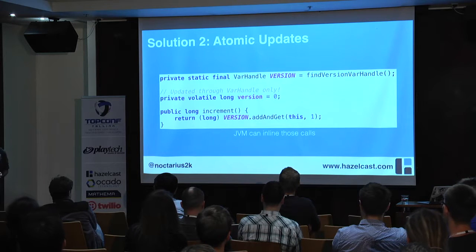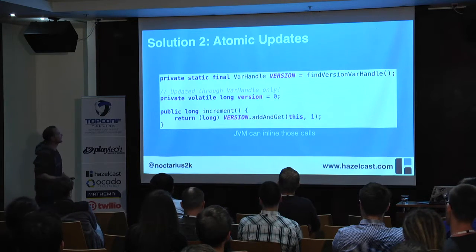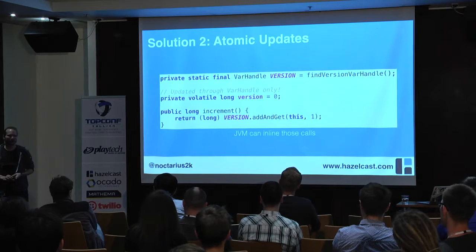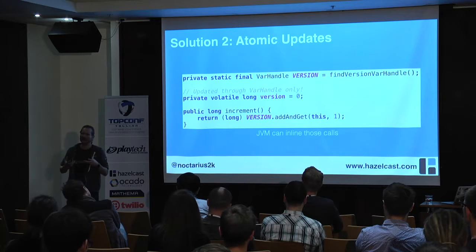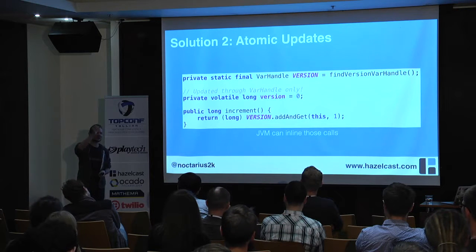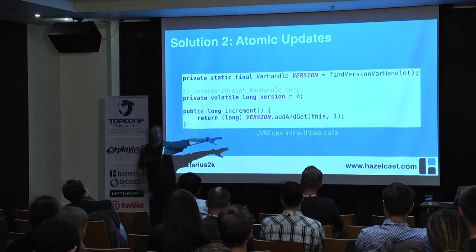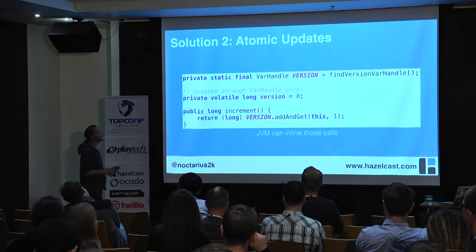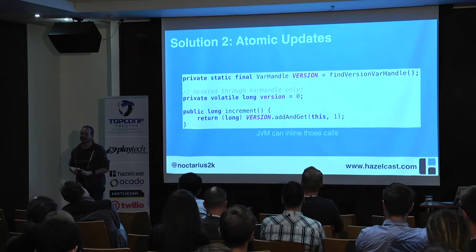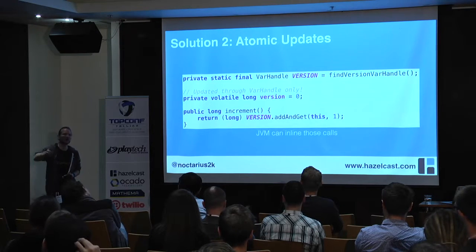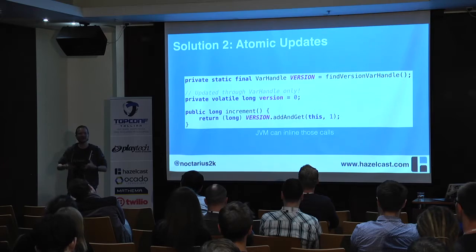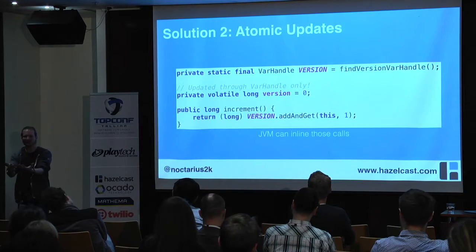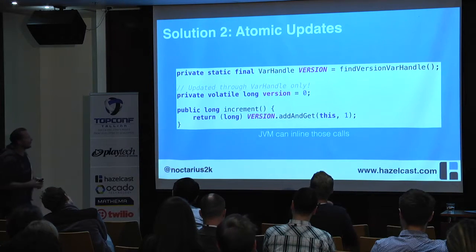For method handles, the idea is the same as reflection, but you don't have to generate code because the method handle itself is an internal call site to the JVM. It looks like the same stuff as in source code from the JVM's perspective — very interesting and it speeds things up a lot, at least in the latest JVM versions. VarHandle is kind of the same thing: whenever you have VarHandle access, it looks to the JVM like calling foo.bar in source code — it can't distinguish those calls anymore.